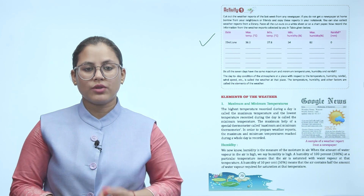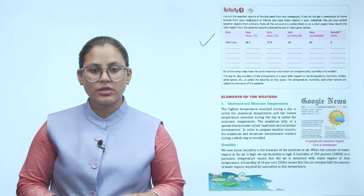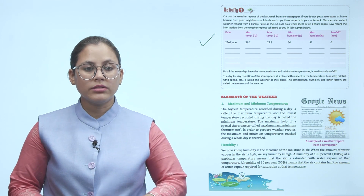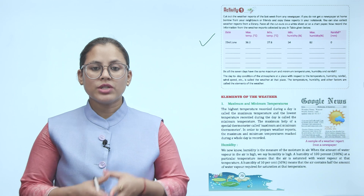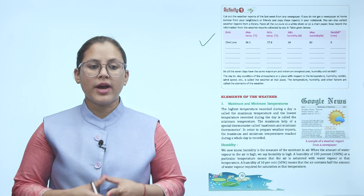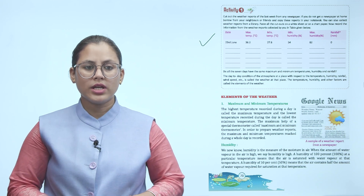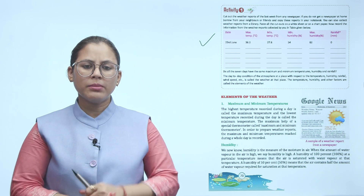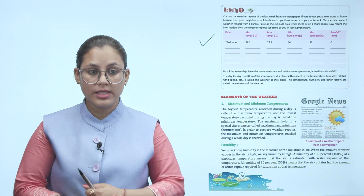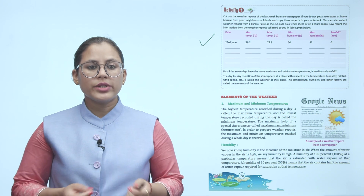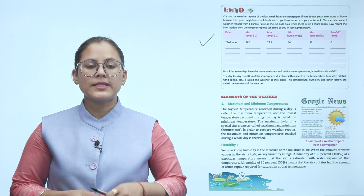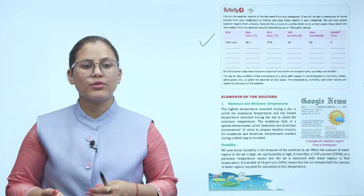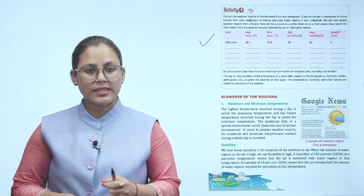The day-to-day condition of the atmosphere at a place with respect to temperature, humidity, rainfall, wind speed, etc. is called the weather at that place. Temperature, humidity and other factors are called the elements of weather. You will notice that in 7 days, the maximum and minimum temperature, humidity and rainfall will not be the same.